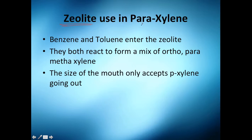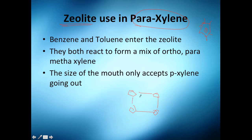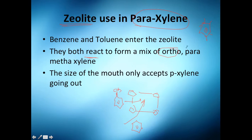I'll give you a little example: the zeolite used in para-xylene production. You have benzene — just a ring with six carbons — and toluene, which has one methane group. They both enter the zeolite. Let's say we have a zeolite here; they go inside and both react to form a mixture of ortho-, para-, and meta-xylene.